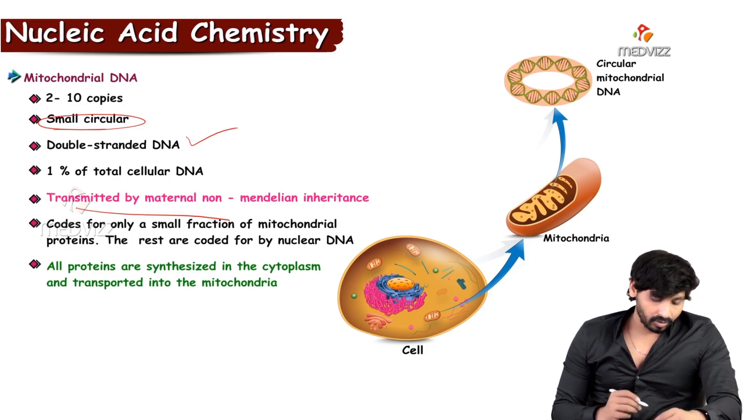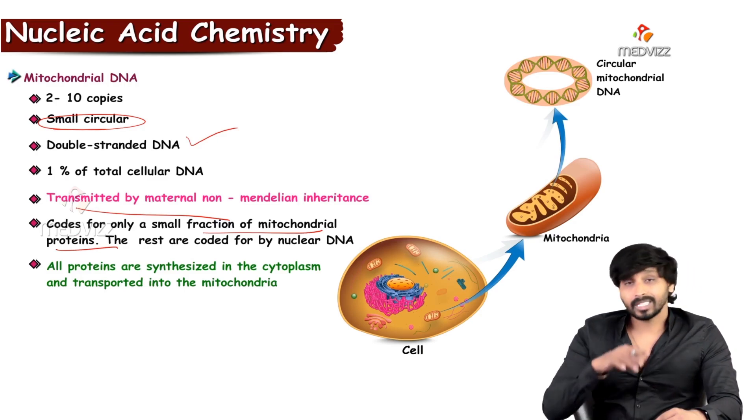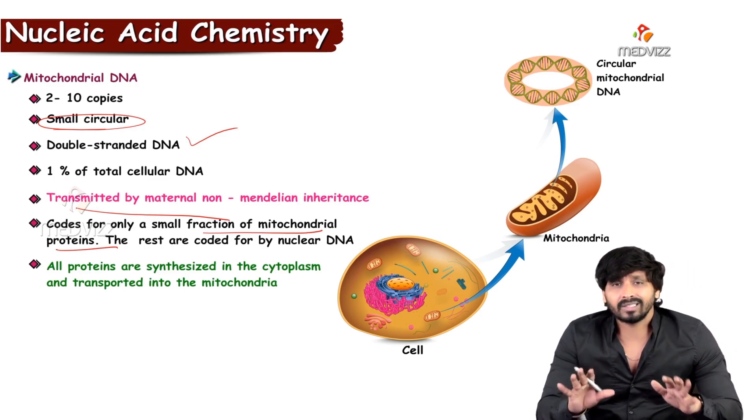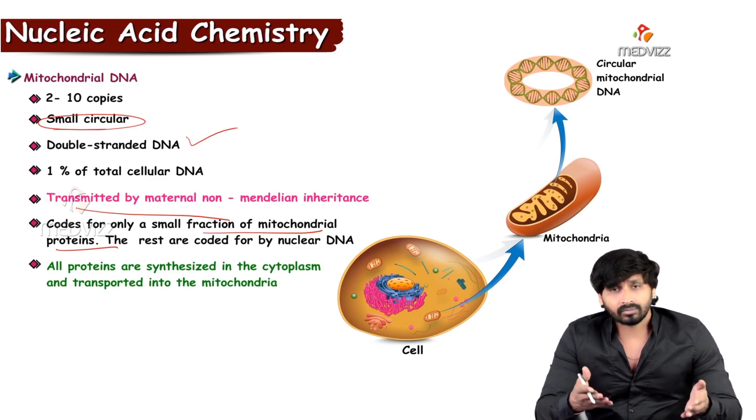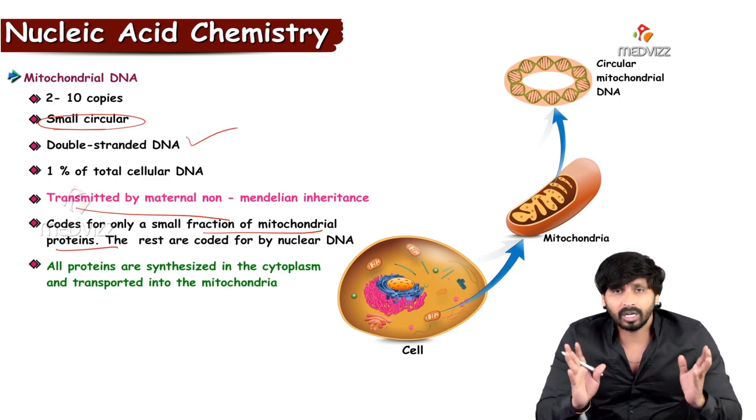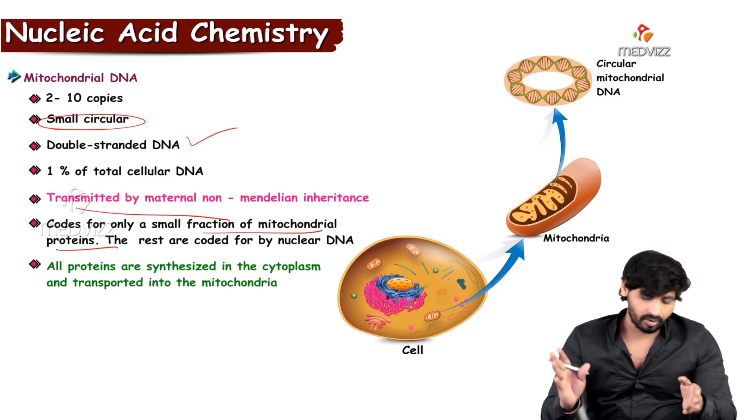What is the purpose of this mitochondrial DNA? It codes for a small fraction of mitochondrial proteins specific to the mitochondria. The metabolic pathways that exist in mitochondria—like Krebs cycle, electron transport chain, or beta oxidation of fatty acids—require enzymes. These are coded by this mitochondrial DNA.